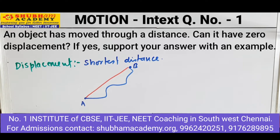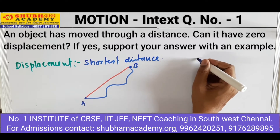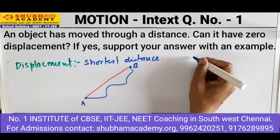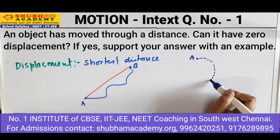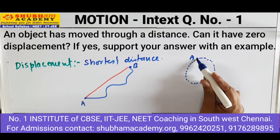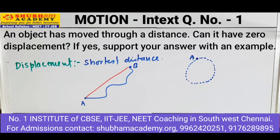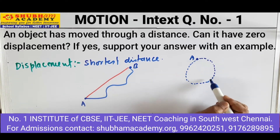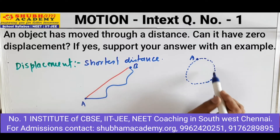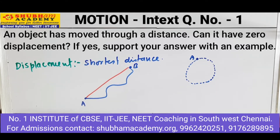Coming back to the question: can the object have zero displacement? Suppose an object started moving from location A, it moved along a circular path and came back to the same position A. Now your initial position is A and your final position is A. The shortest distance between initial and final positions is zero. So if the object is moving in a circular path, it can have zero displacement because the initial and final positions are the same.